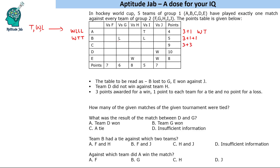Team D has 10 points: 3+3+3+1, meaning three wins and a tie. One win is already given, so we need two wins, a tie, and a loss still to fill. Team E has eight points: 3+3+1+1, meaning two wins and two ties. Two wins are already known, so we need two ties and a loss to fill for this team.